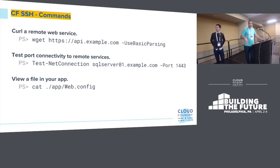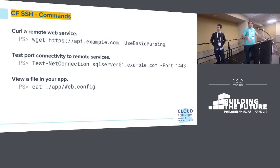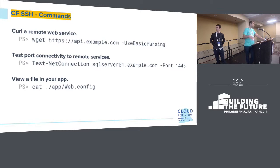Once you're in the container, you can curl an endpoint or wget — use basic parsing, and remember to do that or you'll get a weird error about a GUI needing to pop up on server core, which doesn't exist. Test-NetConnection is the way through PowerShell to validate you can connect to a port — useful if there are firewalls in the way. You can also view files by catting a file to see what your continuous delivery system actually emitted for your web.config and what was actually deployed.